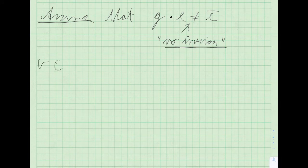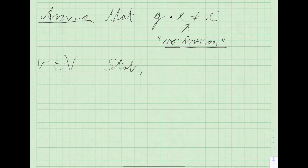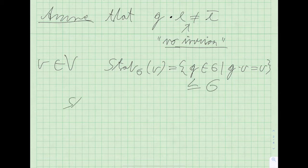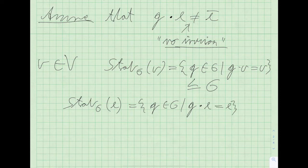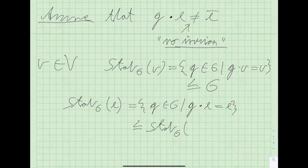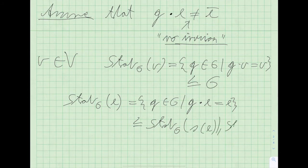For a vertex V in a group action, we define the stabilizer subgroup as all group elements that fix this vertex — clearly a subgroup of G. Similarly, we define the stabilizer of an edge as all group elements that fix the edge. If you fix an edge, you must fix its vertices too, so this is a subgroup of both the stabilizer of the source and the stabilizer of the range of E.